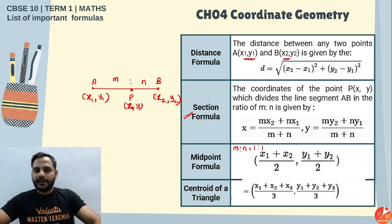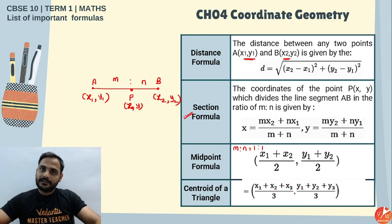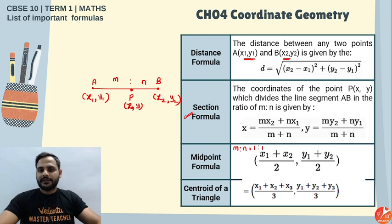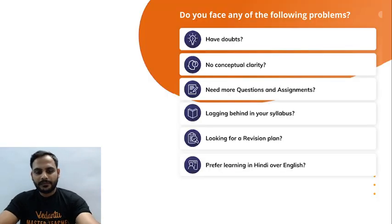Midpoint formula: put m:n as 1:1, giving ((x₁+x₂)/2, (y₁+y₂)/2). Centroid formula: ((x₁+x₂+x₃)/3, (y₁+y₂+y₃)/3).